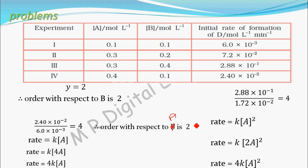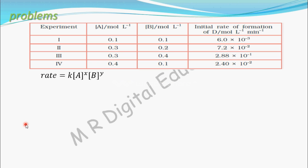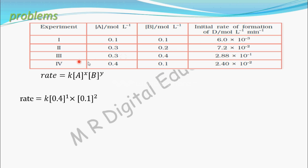We have now found the order with respect to A and the order with respect to B. To find the rate law, we still need the rate constant K. Consider the rate law: rate = K × [A]^X × [B]^Y. We know X and Y — the orders with respect to A and B. We don't know K. So consider any one experiment — let's take the 4th experiment reading.